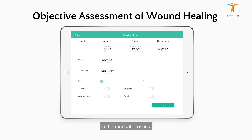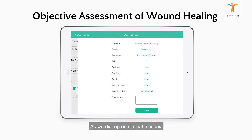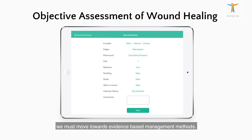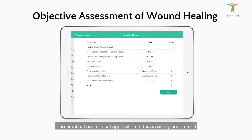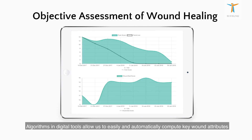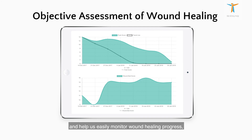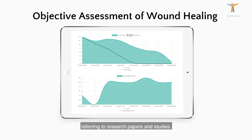Objective assessment of wound healing. In the manual process, monitoring is often difficult due to fragmented information. As we dial up on clinical efficacy, especially in complex chronic wounds, we must move towards evidence-based methods. Algorithms in digital tools allow us to easily and automatically compute key wound attributes and record them into composite scores — for example, the very well-known PUSH score or the less common wound-based score. These composite scores can be charted and help us easily monitor wound healing progress, especially if we want to compare based on prognostic expectations referring to research papers and studies.